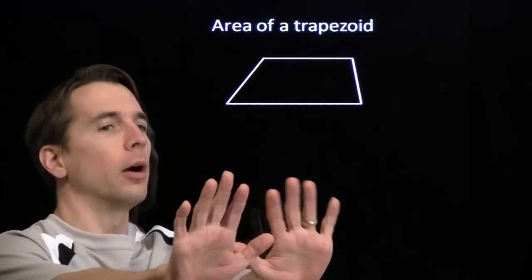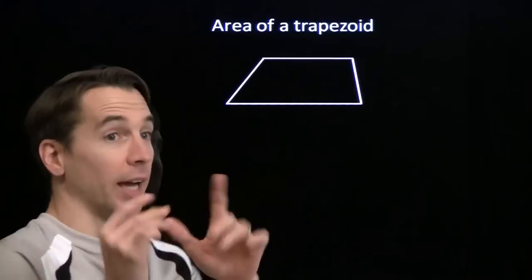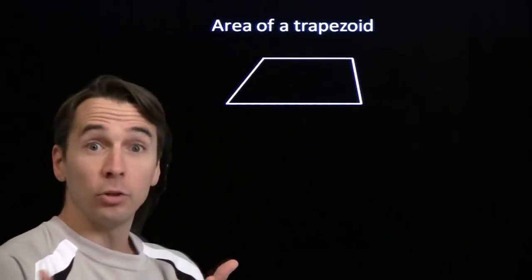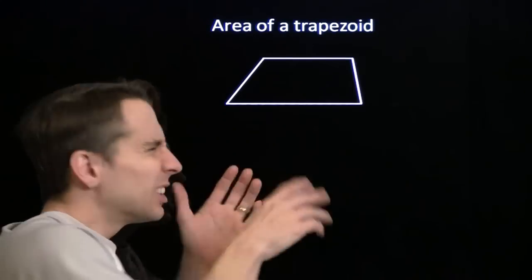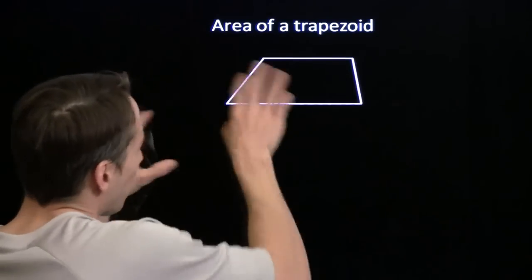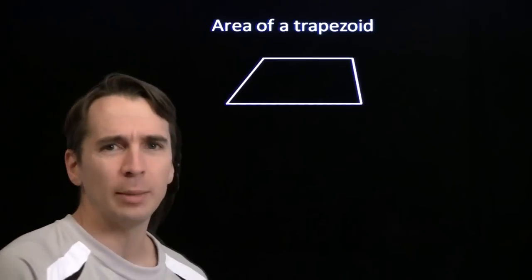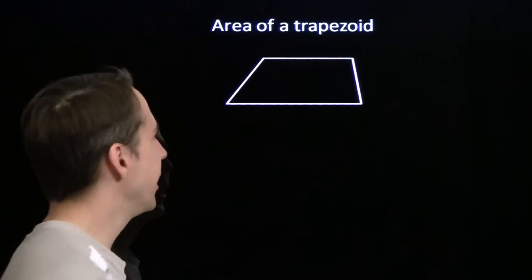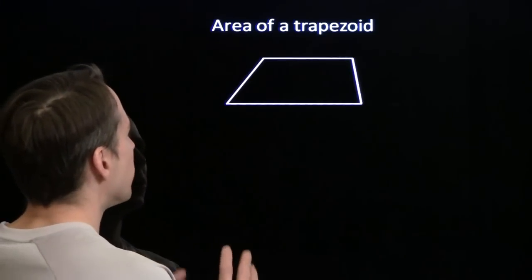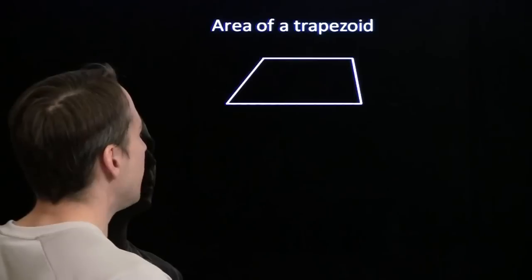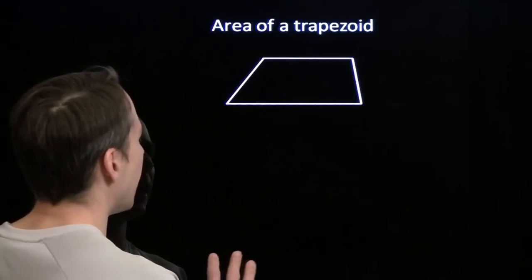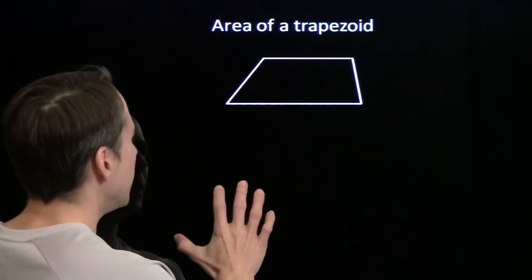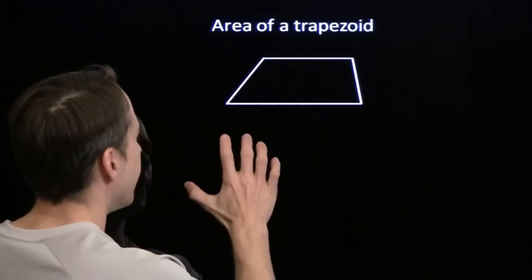I got this, Harvey. I got this. Now, I know what we did with those other shapes — we did something really clever. We rearranged the shape somehow and turned it into something we already knew how to find the area of. So we're going to do the same thing here. I just have to find it. There's something hidden here.